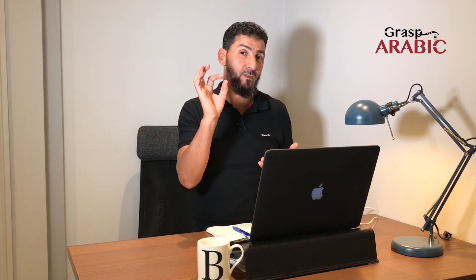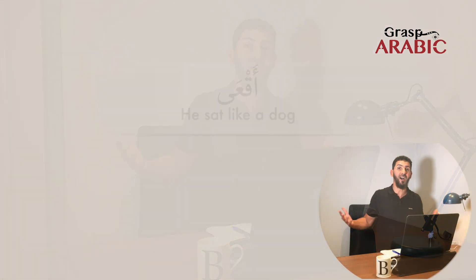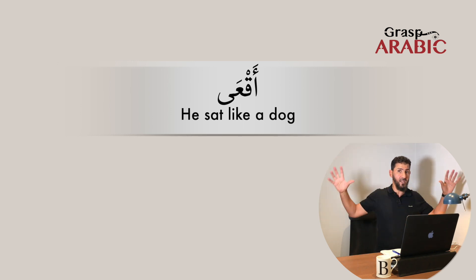For example, if you see a man sitting like a dog — the way dogs normally sit — and you want to say 'he is sitting like a dog,' you have to use four or five words in English. In Arabic, you can say one word that is equivalent to that entire sentence. That one word contains all the meanings: the gender of the person, what he's doing, the way he is sitting. You say one word meaning 'he is sitting like a dog.'